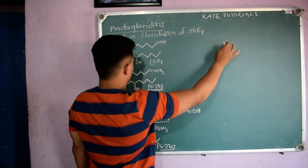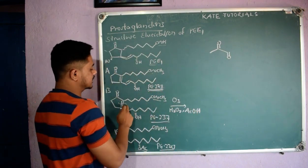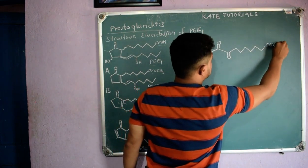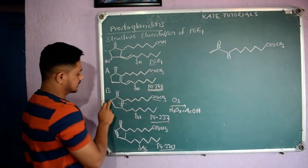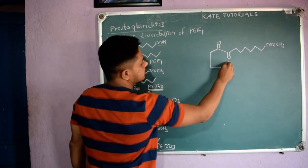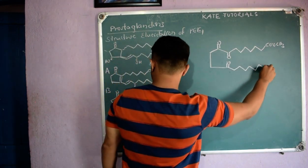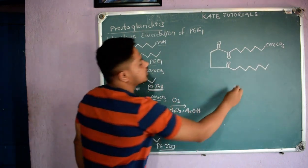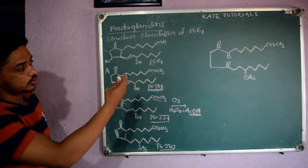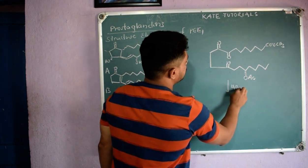Breaking this pi bond: I get C=O on one side, and the other fragments remain as they are — one, two, three carbons and COOCH₃. On the other side the pi bond is broken, giving C=O, with the chain CH₂CH₂CH₂CH₂CH₂CH₂CH₂, and since the reaction happens in acetic acid we get OH — forming a COOH group.